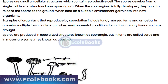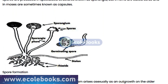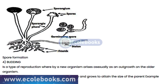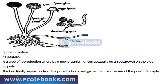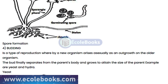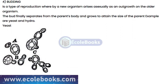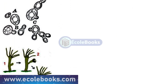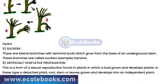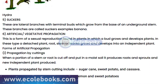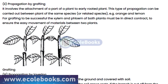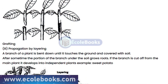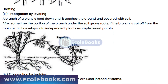In plants, there are two types of sexual reproduction: self-pollination and cross-pollination. Self-pollination occurs when the male gametes from the anther of the same flower fertilize the ovules of the same flower. Cross-pollination occurs when the male gametes from the anther of one flower fertilize the ovules of another flower.